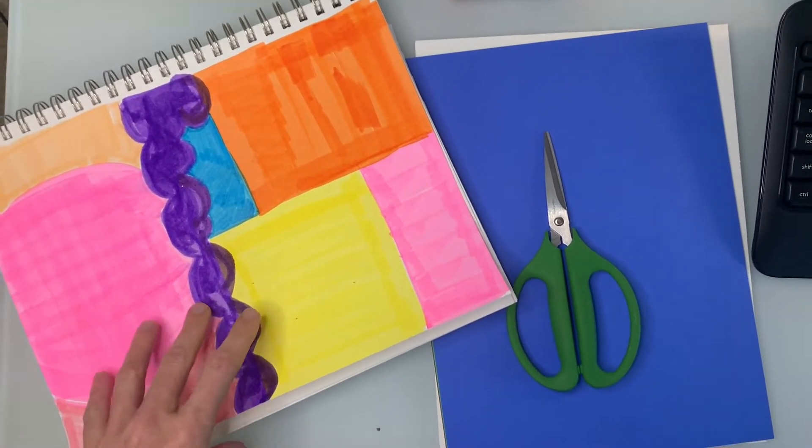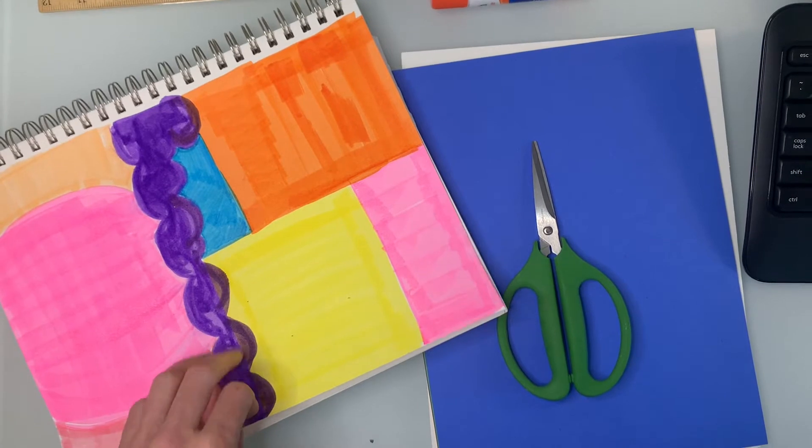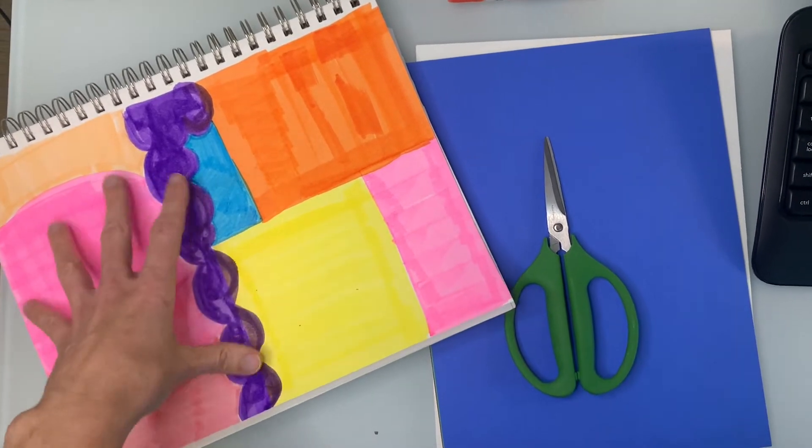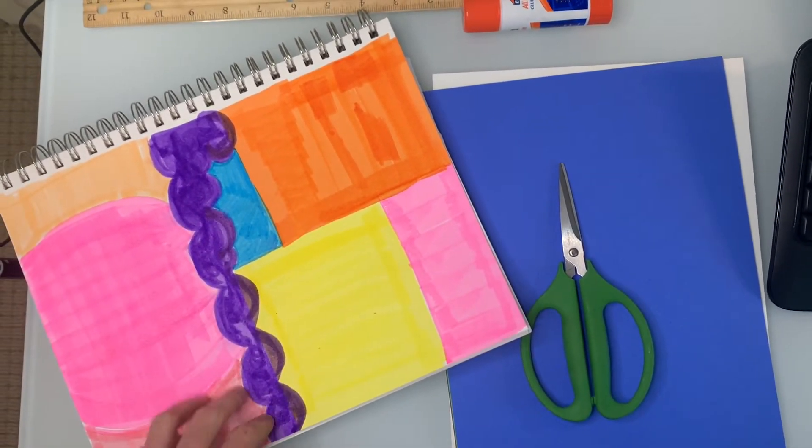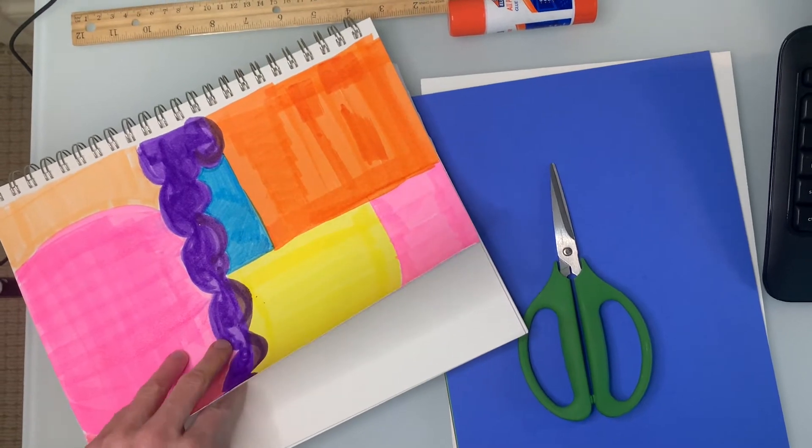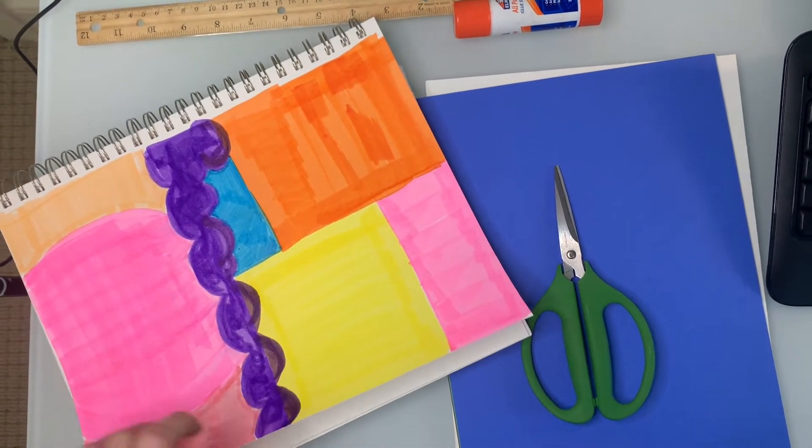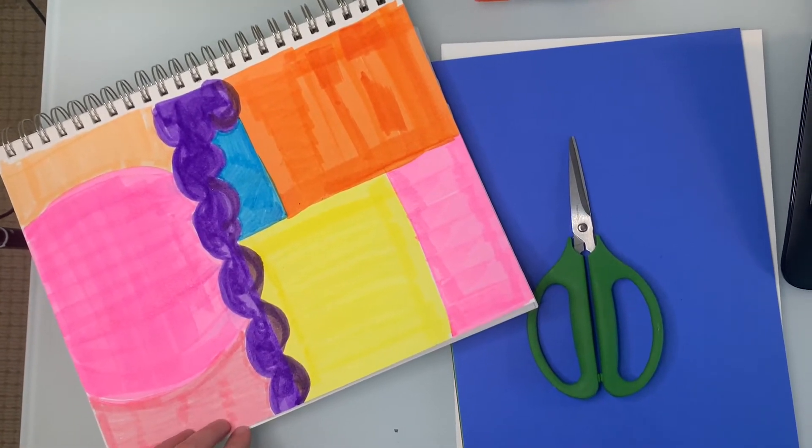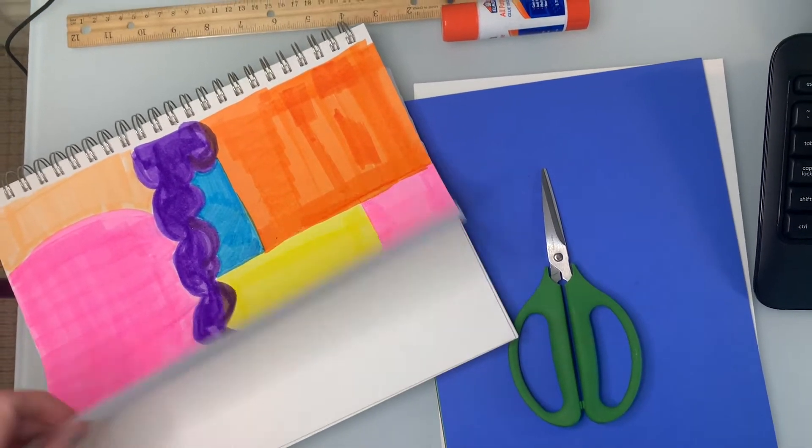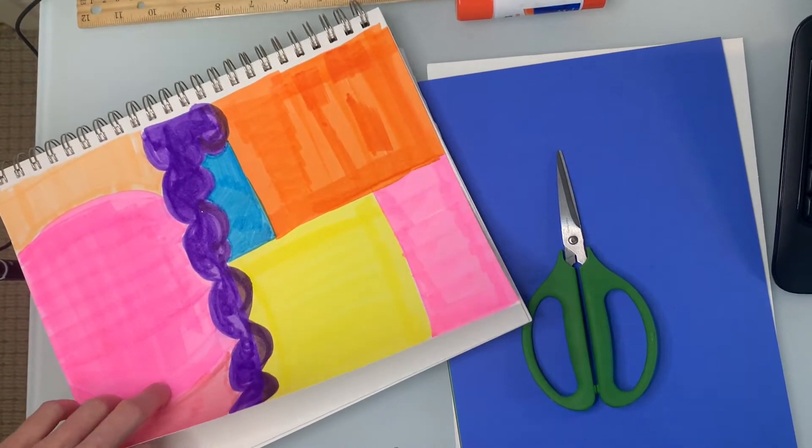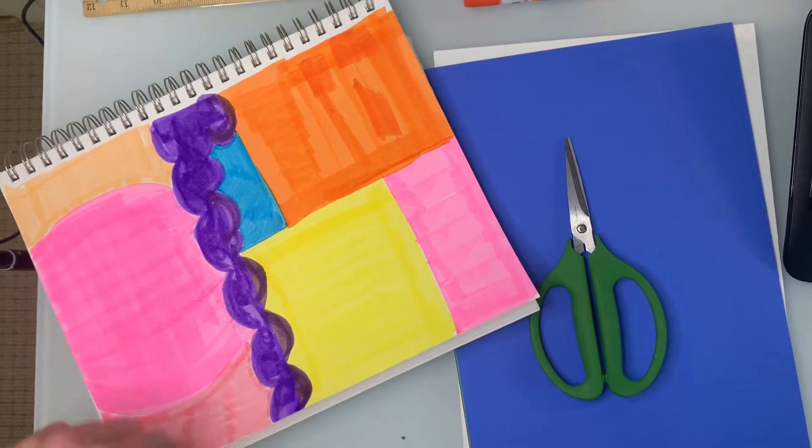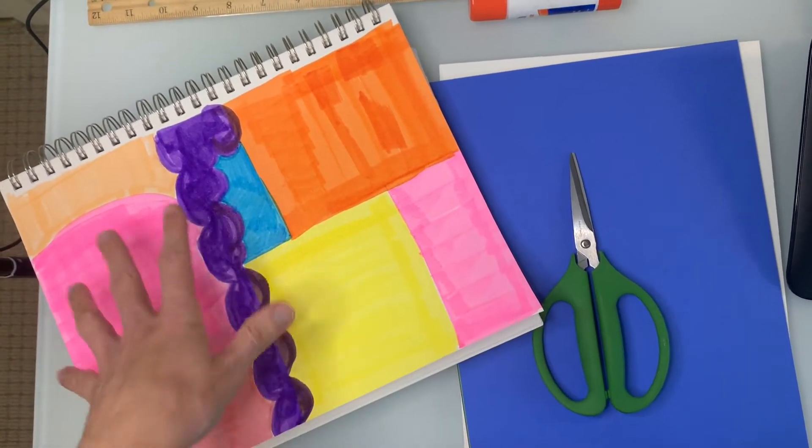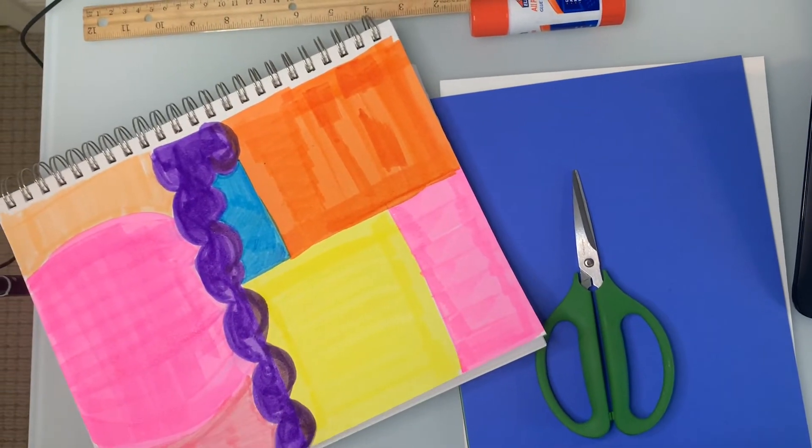For those of you at school who don't have construction paper, I'm going to do it using sheets of paper in my sketchbook. I have covered one piece of paper completely with my markers. I am going to do two more, and then I will cut up the two extra and put it on my background.